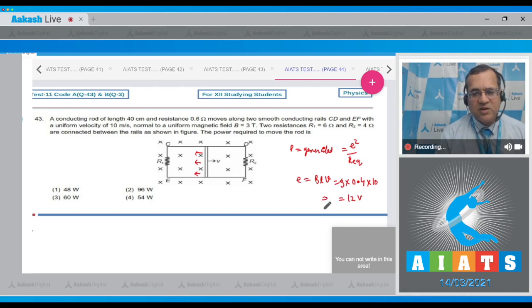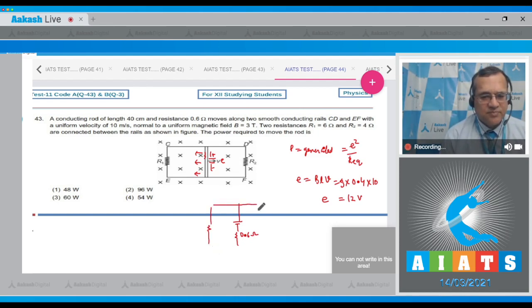the EMF induced is 12 volts. Now look at the circuit: this is a battery of 12 volts with internal resistance of 0.6 ohms. There are two branches: R₁ = 6 ohms and R₂ = 4 ohms. Looking carefully across the battery, these two are in parallel.